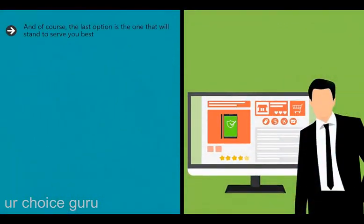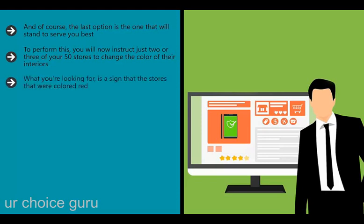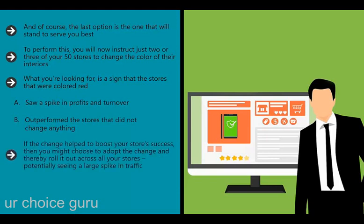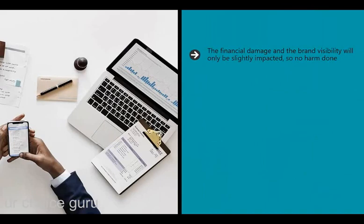The last option - the split test - is the one that will serve you best. You instruct two or three of your 50 stores to change the color of their interiors, then monitor those stores for six months and collect all the data. You're looking for a spike in profits and turnover in the changed stores versus the unchanged ones. If the change helped, you roll it out across all stores. If it hurt, you simply change it back - with only minimal financial damage and brand impact. If you had rolled the change out across all stores immediately, you could have lost a lot of money.